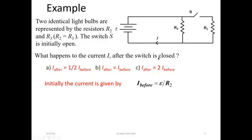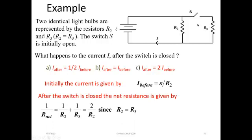In the second situation, after the switch is closed, the net resistance in the parallel connection is given by: 1 over R_total equals 1 over R2 plus 1 over R3. Since R2 and R3 are both equal, this becomes 1 over R2 plus 1 over R2, which equals 2 over R2. Inverting this, the equivalent resistance R_net equals R2 divided by 2.